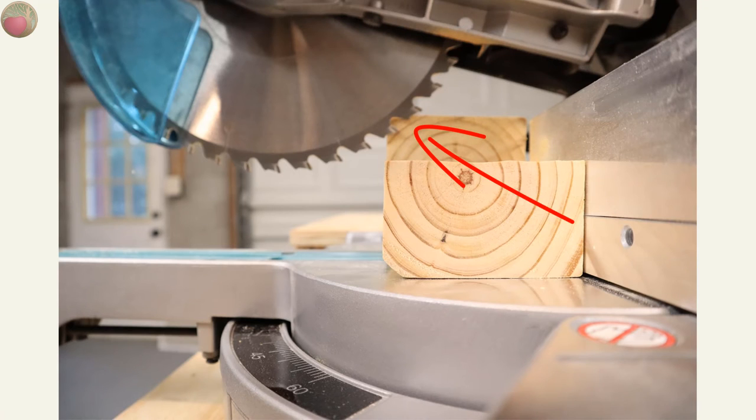But if your blade tip touches the wood piece when fully retracted toward you, then you'll need to lift the blade, scoot the wood, and make a new plunge cut and then cut across to the back of the wood.